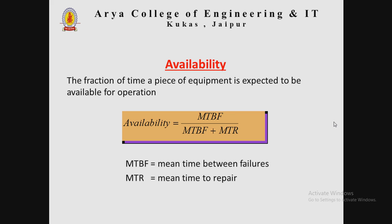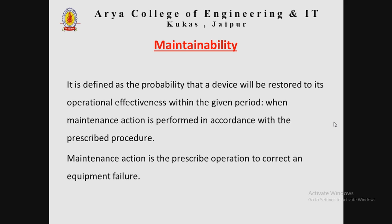Availability is the fraction of time a piece of equipment is expected to be available for operation. Mathematically, availability equals MTBF divided by (MTBF plus MTTR), where MTBF is Mean Time Between Failures and MTTR is Mean Time to Repair.